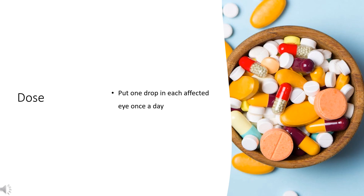For eye itching or redness caused by pollen, ragweed, grass, animal hair, or dander — ophthalmic dosage form eye drops: 0.1% solution, adults and children 2 years of age and older, put one drop in each affected eye two times a day at least 6 to 8 hours apart. Children younger than 2 years of age: use and dose must be determined by your doctor. For 0.2% or 0.7% ophthalmic solution, adults and children 2 years of age and older: put one drop in affected eye once a day. Children younger than 2 years of age: use and dose must be determined by your doctor.